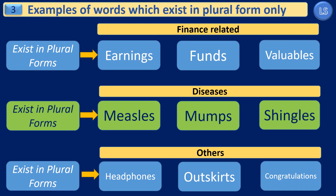In the last group of words, we again have three subsections. Under finance-related terms, we have the words earnings, funds, and valuables. We don't use the terms earning, fund, or valuable, because these terms come in plural forms only. The next subsection covers diseases: we have the words measles, mumps, and shingles. Again, all these come in plural form only.